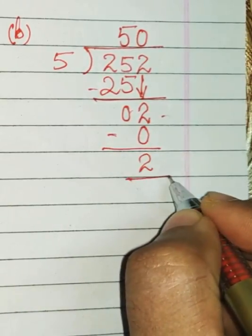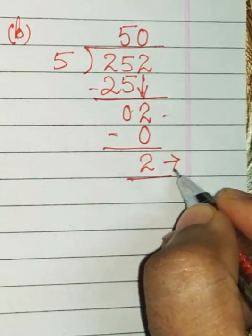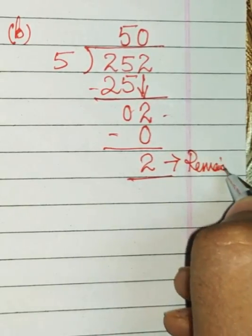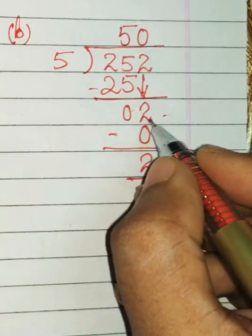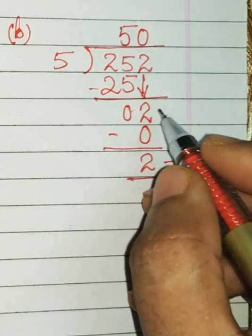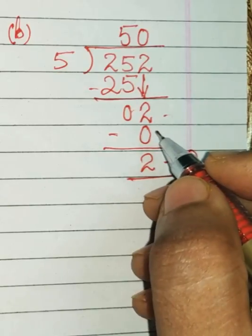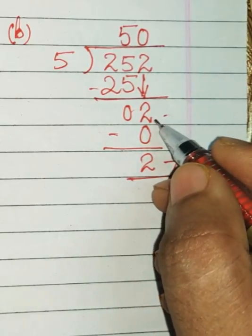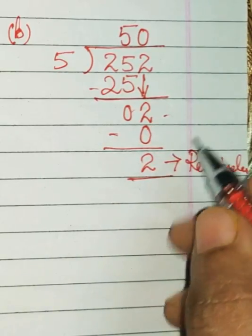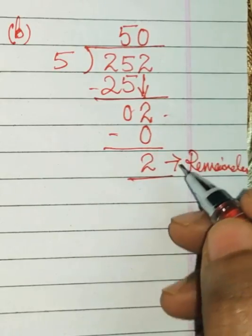Now you subtract 2 minus 0 is 2. This 2 now becomes the remainder. But this is the question: do not write remainder at this place. Now you will ask, miss, this is also 2, this is also 2, why we won't write remainder here?